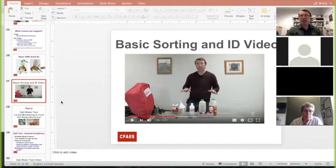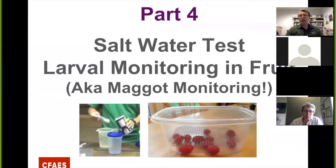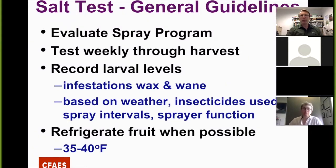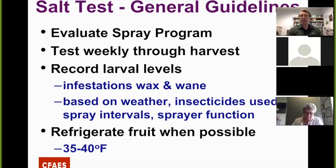The last part I want to talk about is saltwater testing, where we look for larvae in the fruit. This is also called maggot monitoring. The purpose of the saltwater test is to evaluate the spray program — seeing how well we're covering the fruit and controlling the adults. Generally, we're going to want to make that test weekly on ripe fruit and record those larvae levels. Just know that infestation levels of larvae might go up and down based on weather, insecticide use, spray intervals, how well the sprayer is functioning, or if a nozzle plugs up — these all affect what you see in terms of overall spray efficacy.